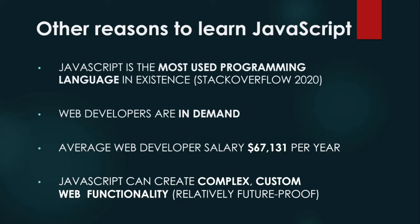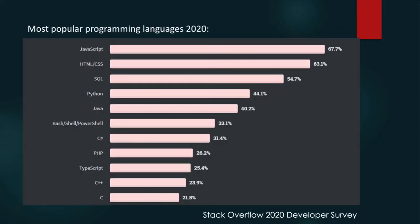Let's move on to other reasons to learn JavaScript that are more job focused. JavaScript is the most used programming language in existence, according to Stack Overflow surveys — I've got the 2020 results. You can see that JavaScript is more popular than HTML and CSS. The good thing if you start learning JavaScript is you're not learning a niche language; there are plenty of resources out there on the internet, and it's very widely used, so there's plenty of demand for JavaScript developers.